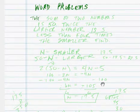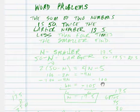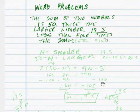So let's take a look at this one. The sum of two numbers is 50, and twice the larger number is 5 less than 4 times the smaller. Now we need to find the numbers.